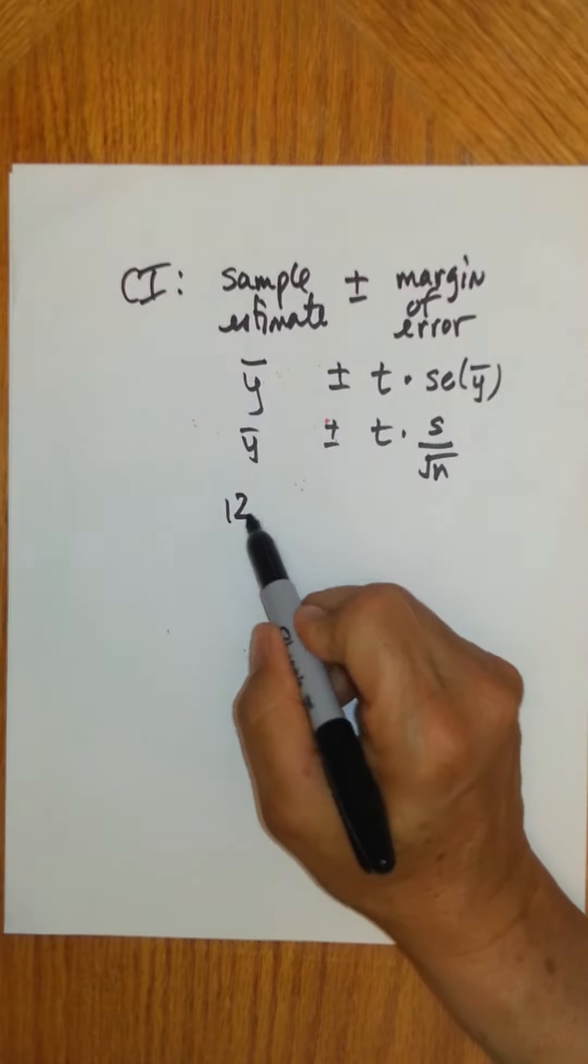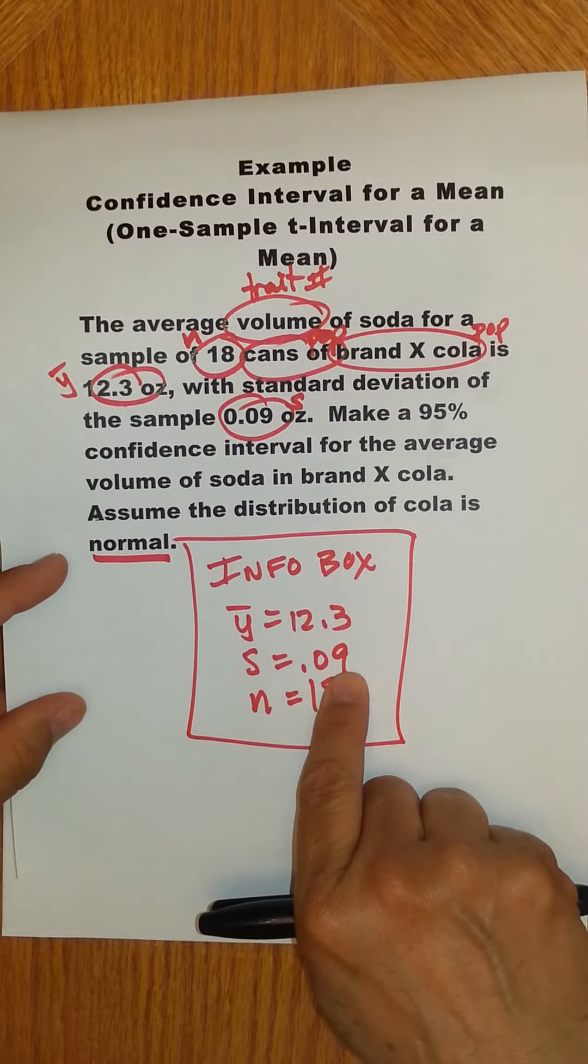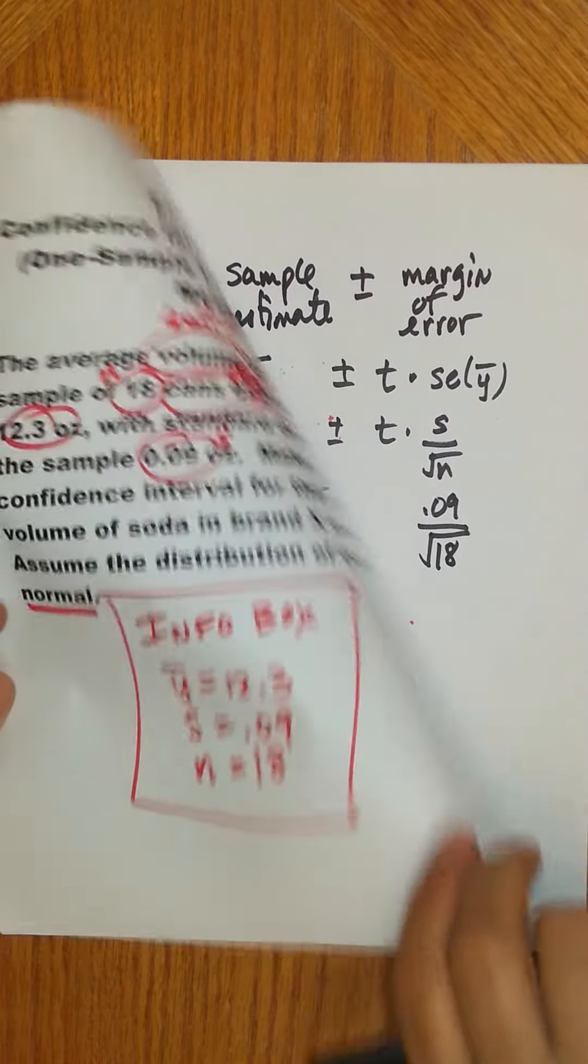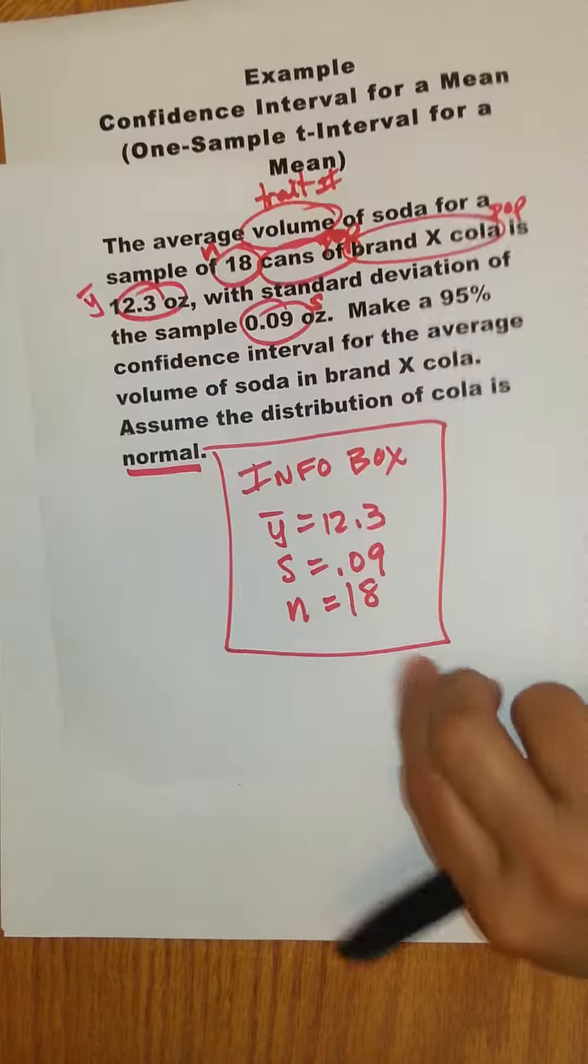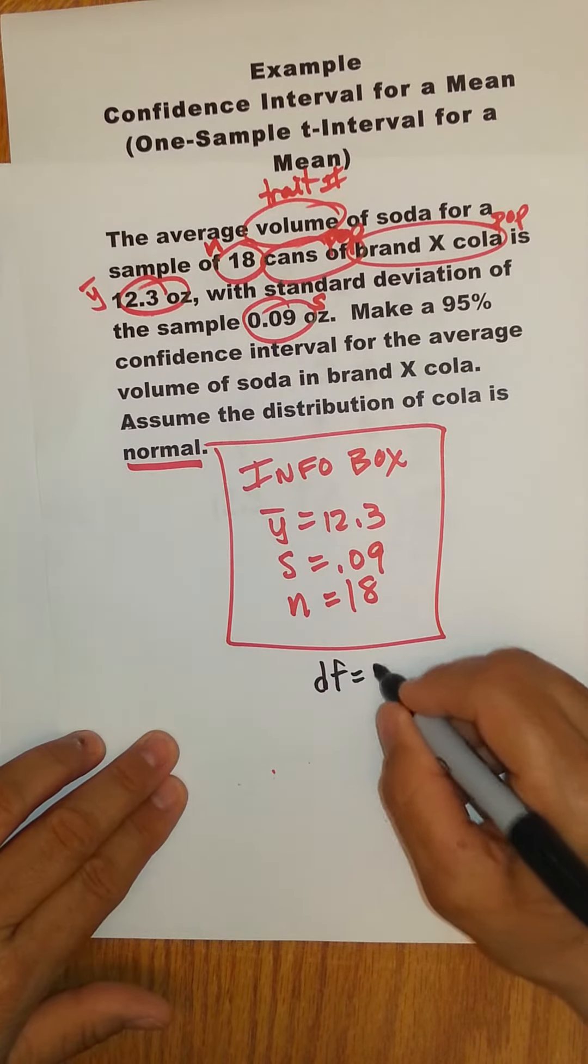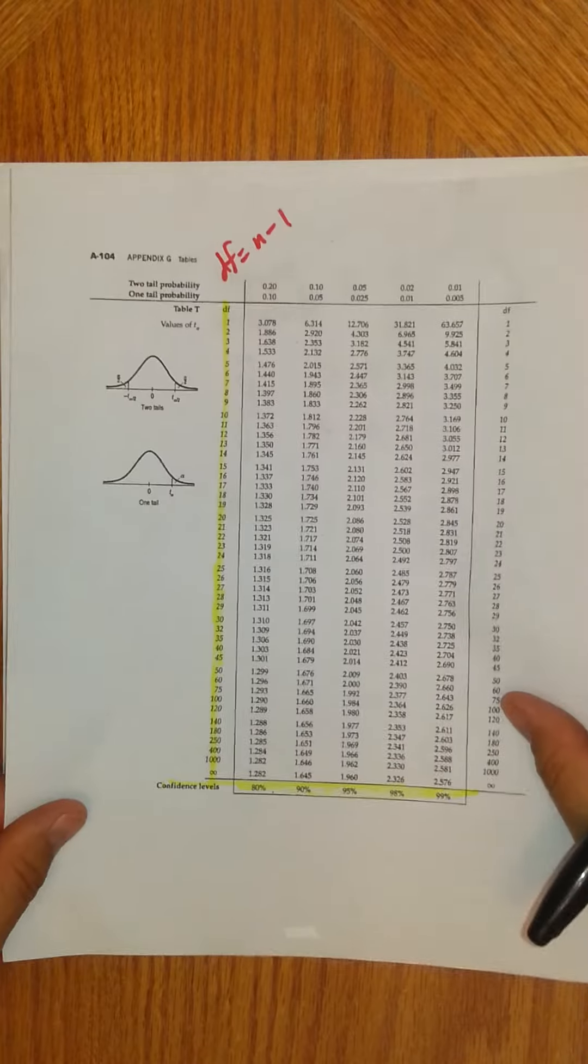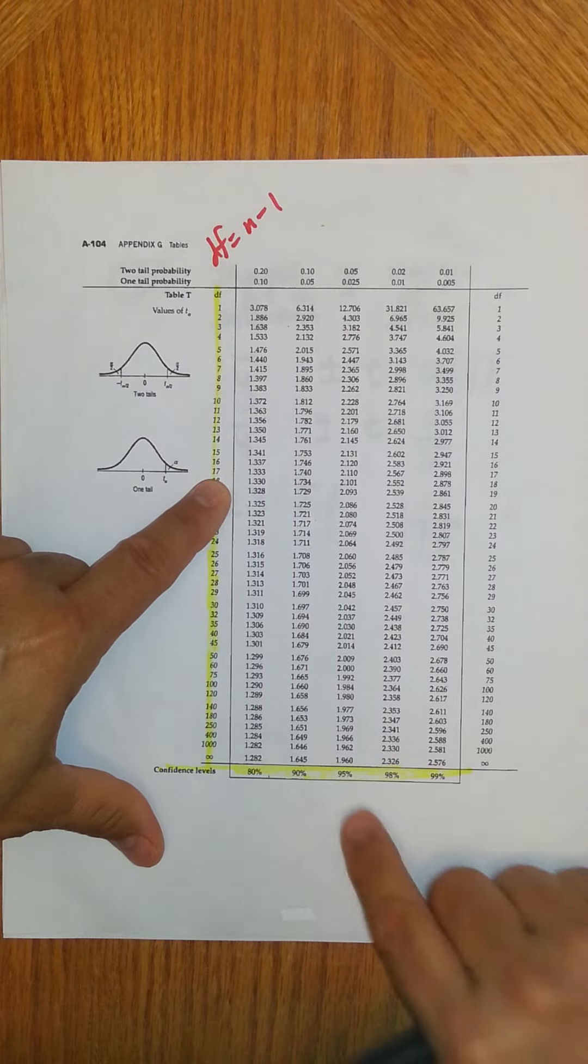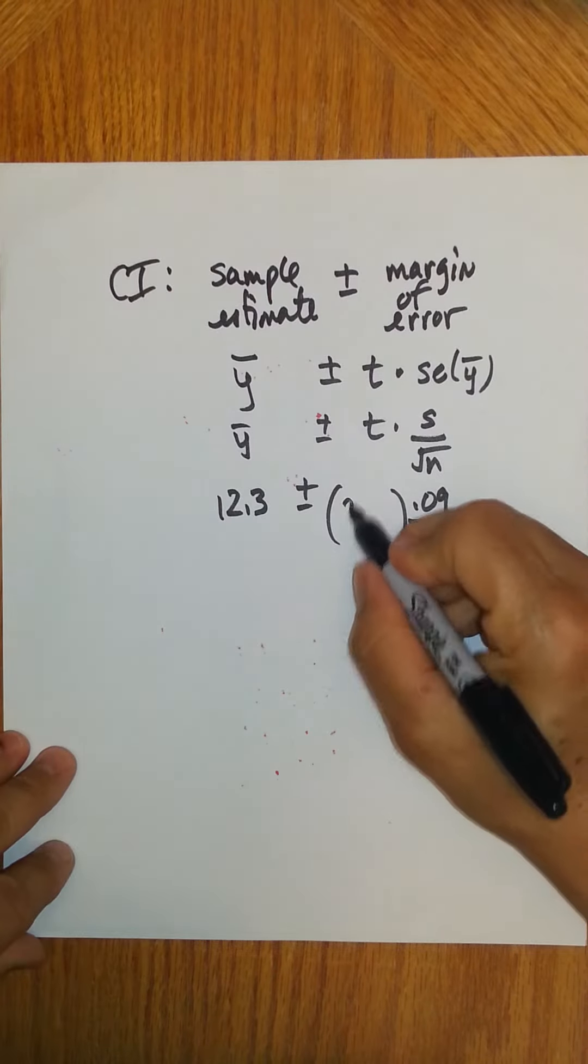Using our info box, we actually have most of our information there. So we would say 12.3 plus or minus, we're going to have to look up t in our t multiplier sheet, but let's put in s, 0.09, divided by square root of 18. And then we have to look up our multiplier. We have n is 18, so we have degrees of freedom equals 17. And we're looking up a 95% confidence level. We're going to look up 17 degrees of freedom and 95% confidence, that's going to give me 2.110.